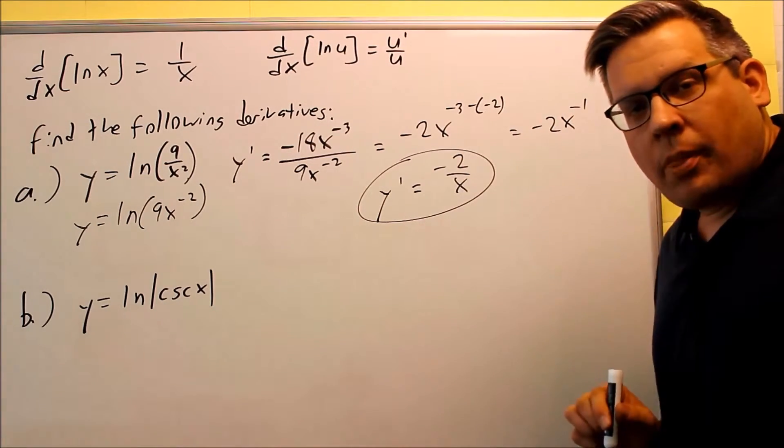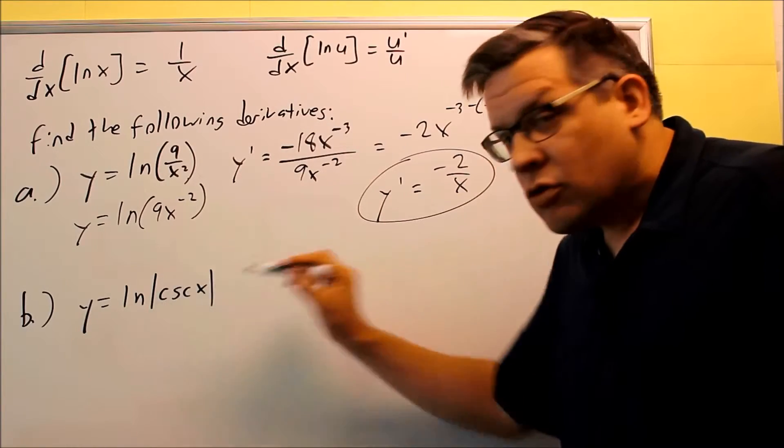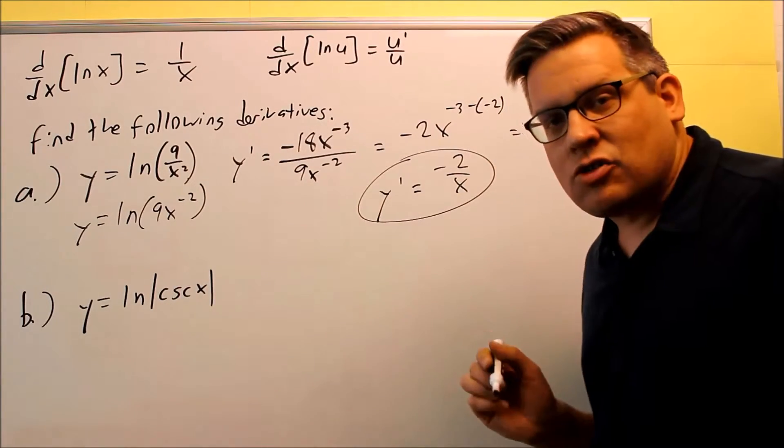Let's now take a look at the bottom one. In this case, the part inside is going to be your u, so we have cosecant x as your u this time.